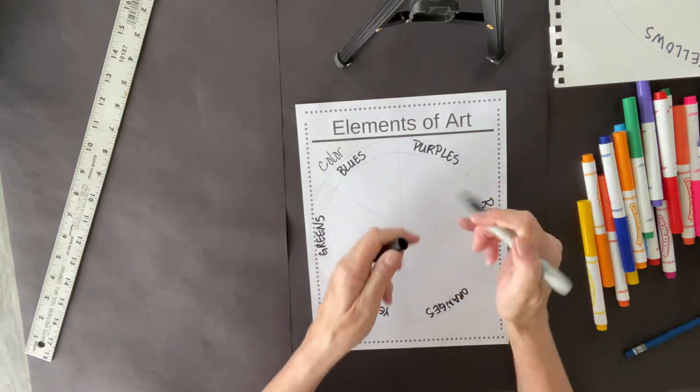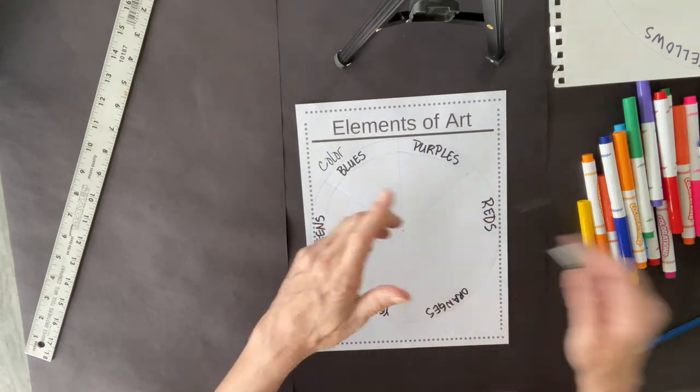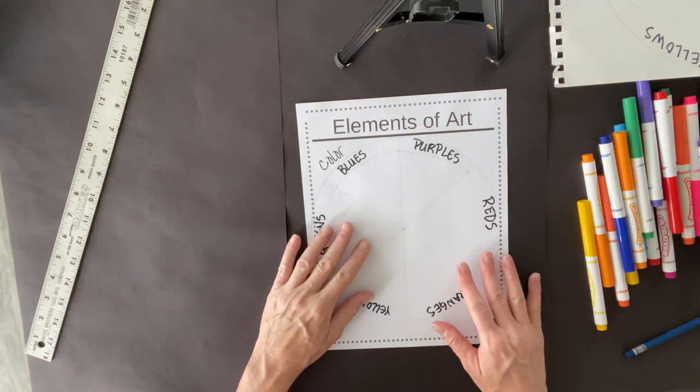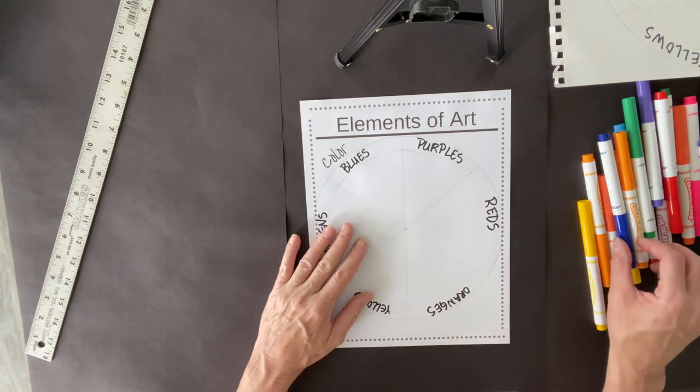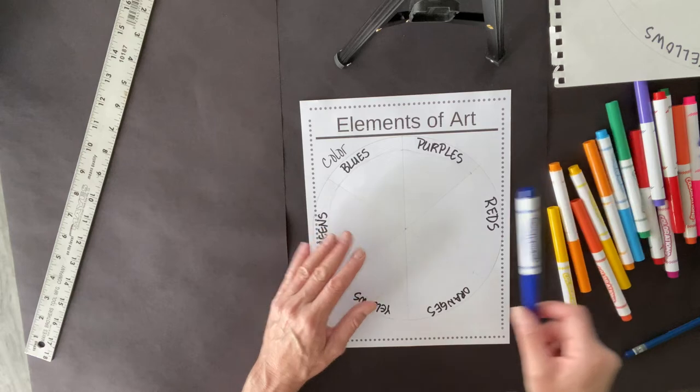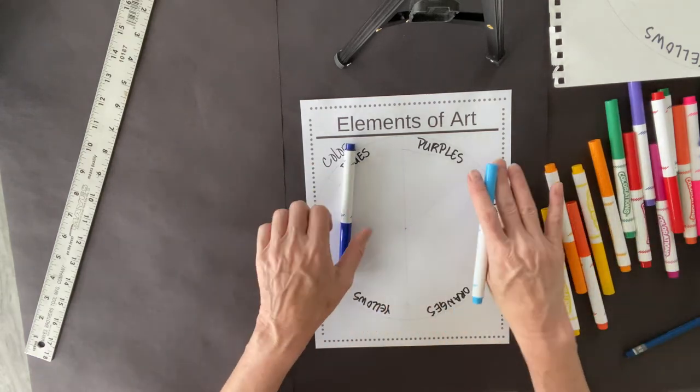I'm going to be using markers for this, but you can use whatever you have. What I'm going to do is I'm going to use a system called pointillism. I'm just going to do dots.